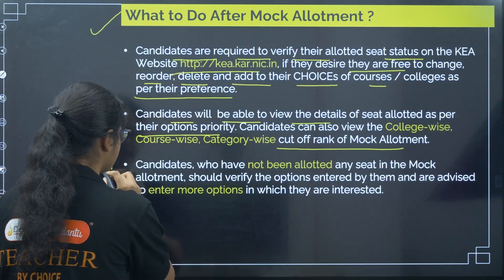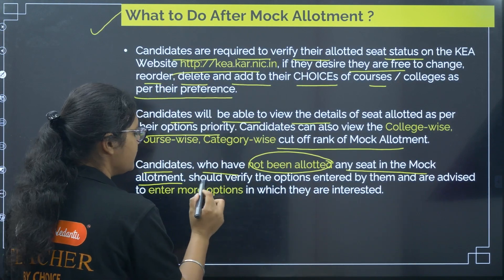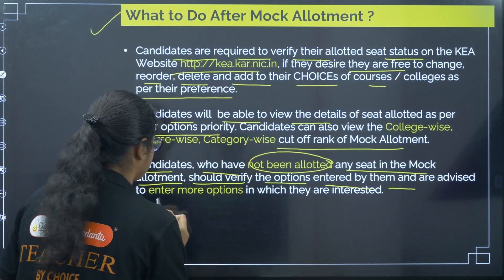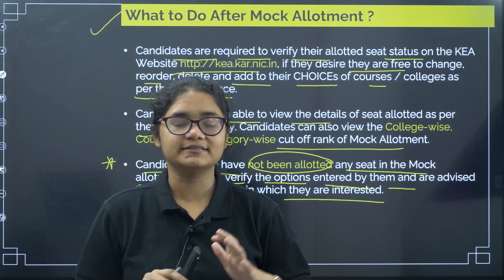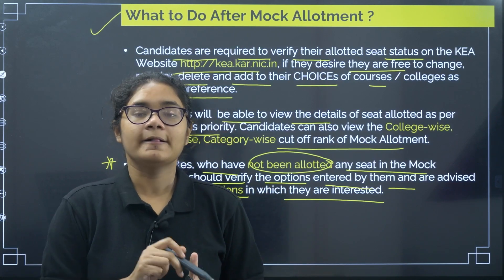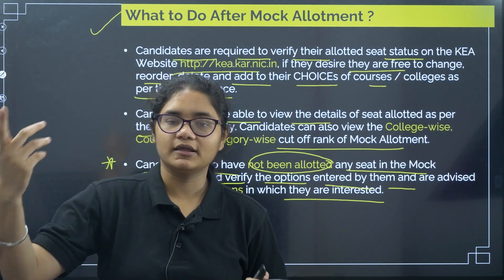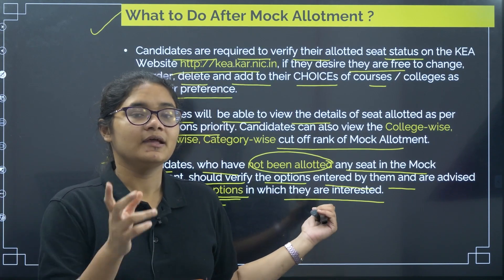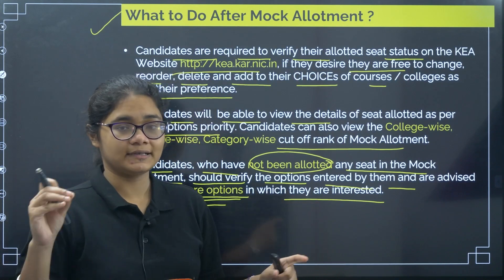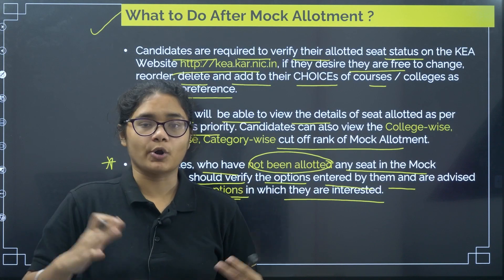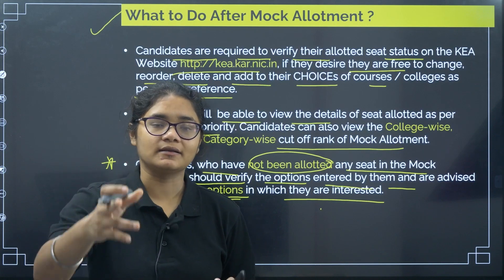This is very important: candidates who have not been allotted any seat in the mock allotment should verify the options entered by them and are advised to enter more options in which they are interested. If any student is not getting any seat in the mock allotment, it can happen that in the real allotment also they cannot get any seat. So it is advisable to add more options so that you can get a seat in the real allotment.